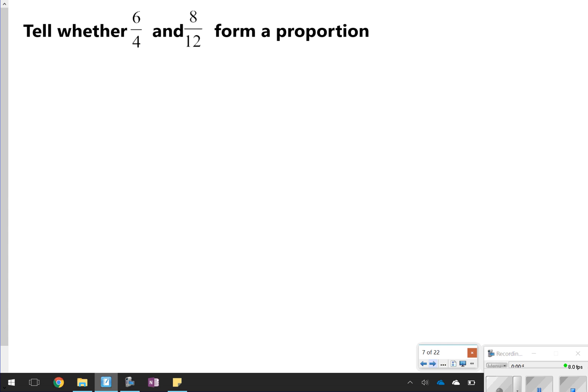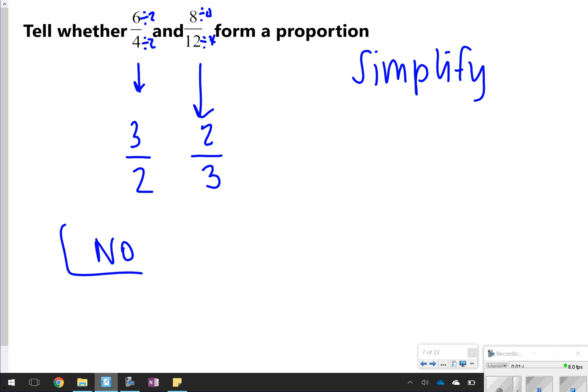Alright, so this one says, tell whether 6/4 and 8/12 form a proportion. Remember, proportions are equivalent fractions. So what you could do here is simplify to see if they are proportional. 6/4 can be reduced to 3/2. All I did was divide 6 by 2, 4 by 2, got 3/2, and I divided 8 by 4—8 by 4 is 2, 12 by 4 is 3. Sorry guys. Even though they simplify to be the same numbers, they are not identical fractions, so these are not proportional. You would just answer no. A lot of your homework questions are going to be yes or no questions.